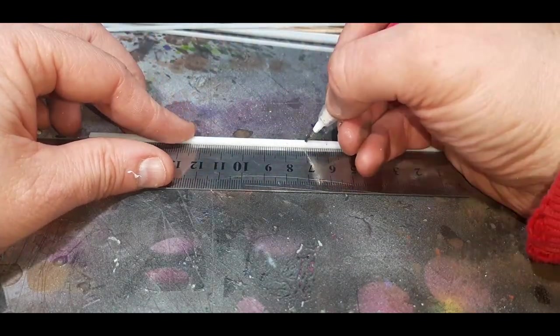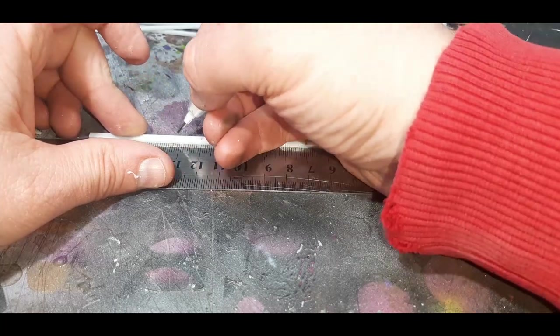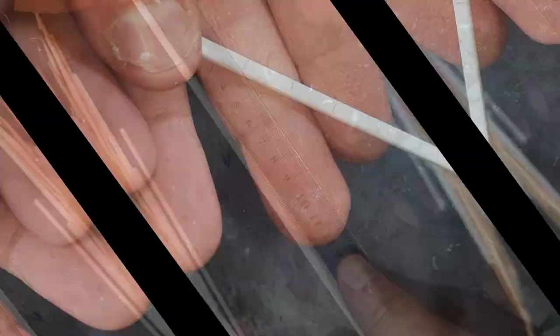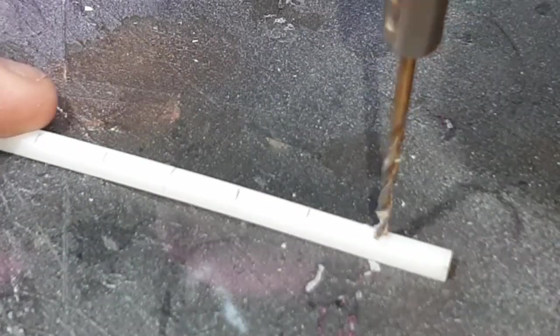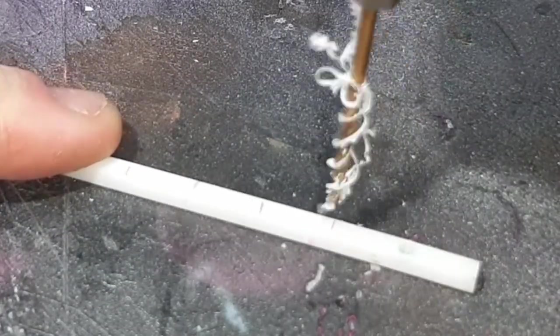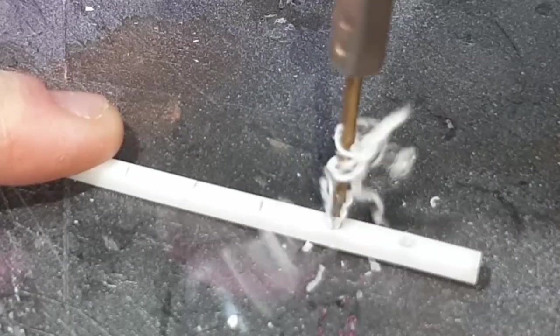So the first thing to do with the styrene rod is mark out the rungs of the ladder. I've gone with one centimeter for each rung and gone along the whole rod putting down these one centimeter marks. Along each of the markings with my drill, I've just put a hole in, trying to keep these holes as straight as possible but if they're slightly off I wasn't too worried.